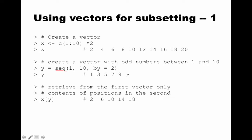We can use that to subset the vector x. If we say x[y], we're going to get from x only the elements which are in positions 1, 3, 5, 7, and 9. So we get 2, 6, 10, 14, and 18. Whatever the values are in vector y, they become the positions we are selecting from x.